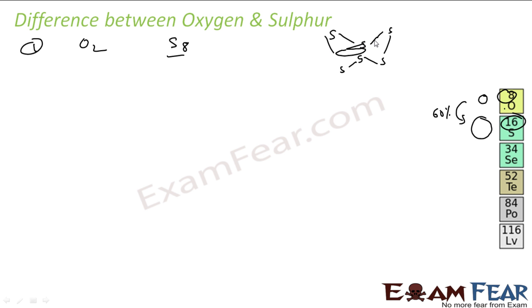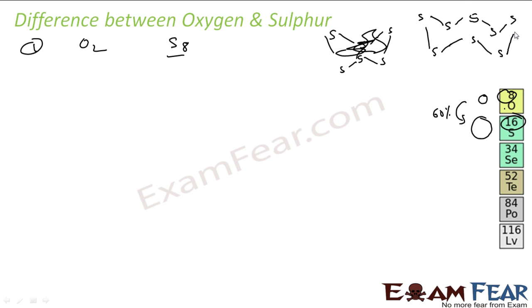Sulfur typically exists as S₈ — a ring structure of 8 sulfur atoms — or sometimes even as S₆. But oxygen is almost always diatomic.